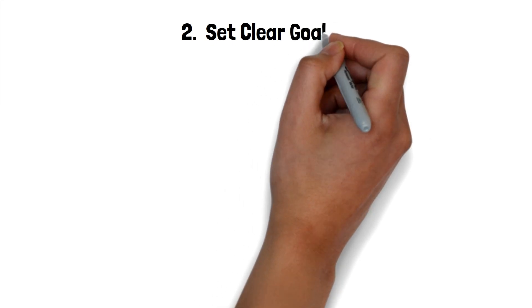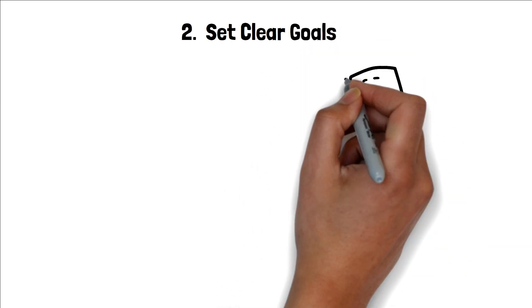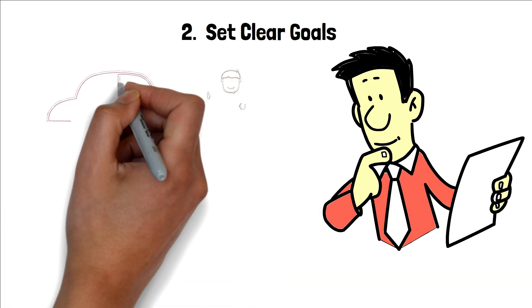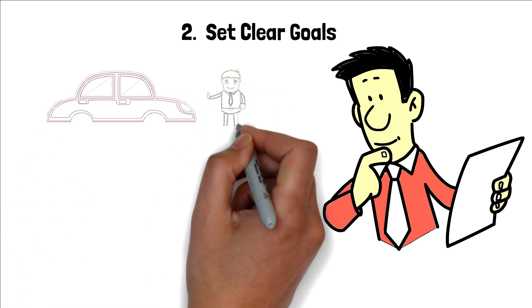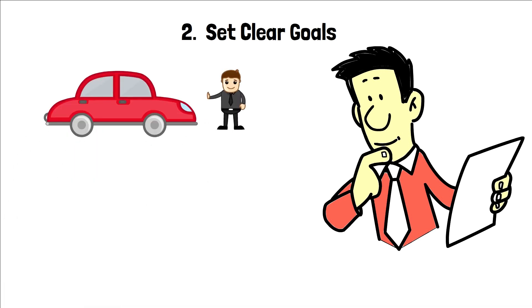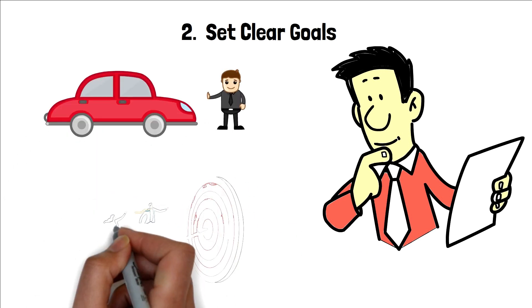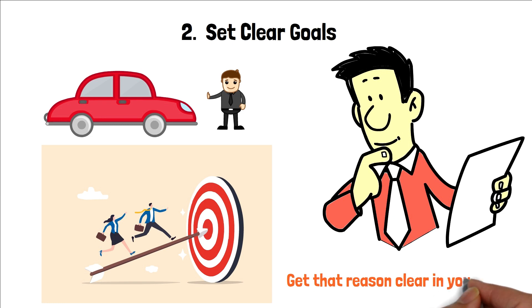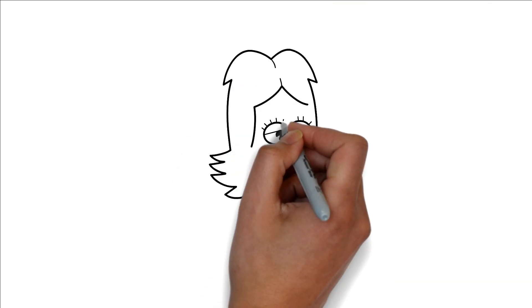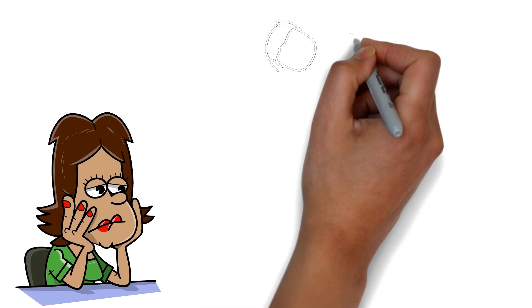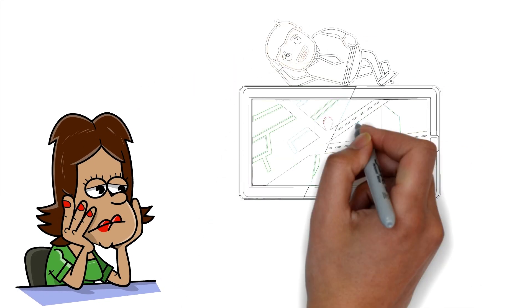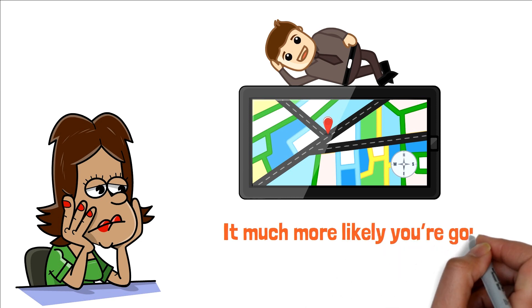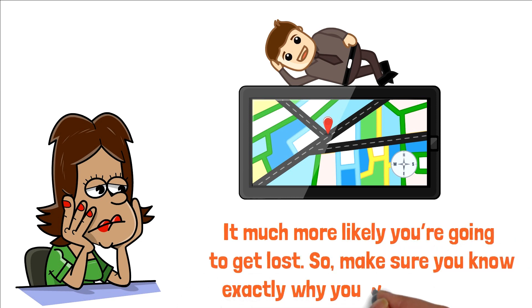2. Set clear goals. Alright, let's break it down a bit. So you're thinking of doing a dopamine detox, right? But here's the deal: diving into this without knowing why is like setting off on a road trip with no idea where you're headed. Maybe you're chasing that laser-focused mindset, hoping to soak up the simple joys of life, or just wanting to feel that kick from nailing a tough task. Whatever it is, get that reason clear in your head. It's going to be your north star when old habits try to pull you back. Think of it as your personal GPS, guiding each decision and keeping you on track during this whole detox adventure. Without a GPS, it's much more likely you're going to get lost. So make sure you know exactly why you want to do this.